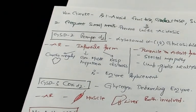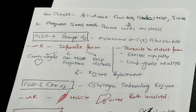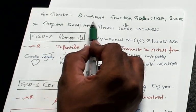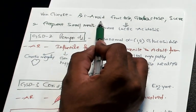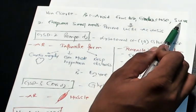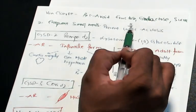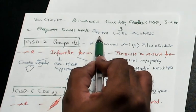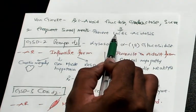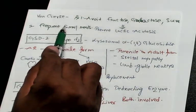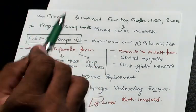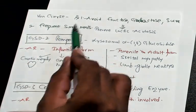How do you treat Von Gierke? We treat by avoiding fructose, galactose, and sucrose in the diet, so that you can prevent lactic acidosis. Frequent small meals also need to be administered. That is the story of Von Gierke.